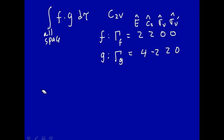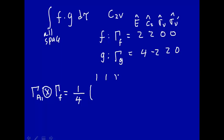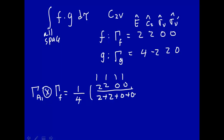Let's see if there's any A1 symmetry in these reducible representations. We project out the A1 component from the f function using the reduction formula: take 1 over the total number of symmetry operations, multiply the A1 characters (1, 1, 1, 1) by the reducible representation of f (2, 2, 0, 0), and sum them. That gives (1)(2) + (1)(2) + (1)(0) + (1)(0) = 4, and 4 divided by 4 equals 1. So yes, this implies there is one A1 irreducible representation within function f.